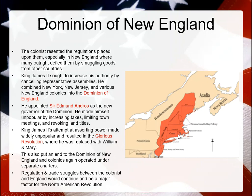A new governor, Sir Edmund Andros, was appointed and was widely unpopular. He started increasing taxes, limiting meetings, and revoking land titles. He became a watchdog and overseer over everything, and the freedom that American colonists had originally enjoyed started getting stripped away. Not just the colonists — the people in England themselves didn't like King James II either.